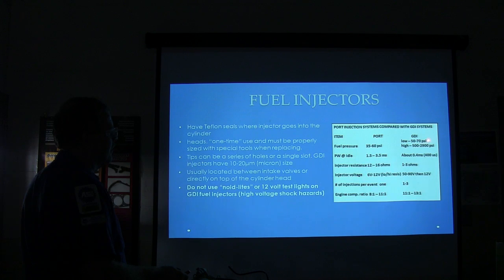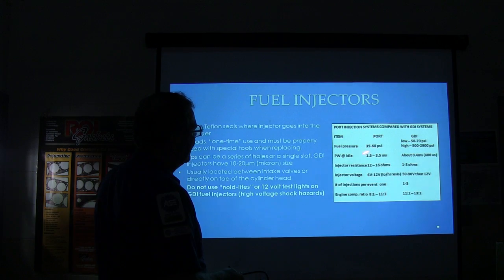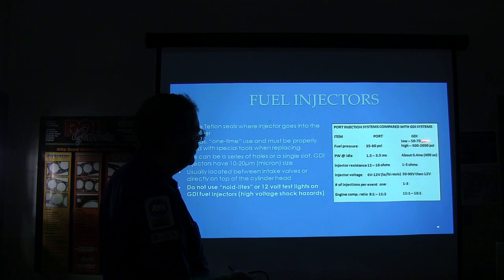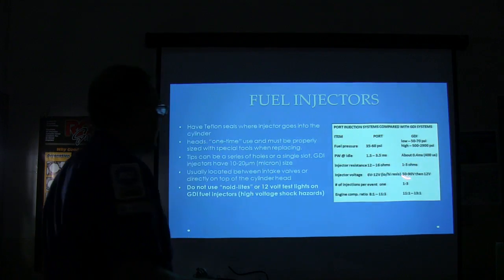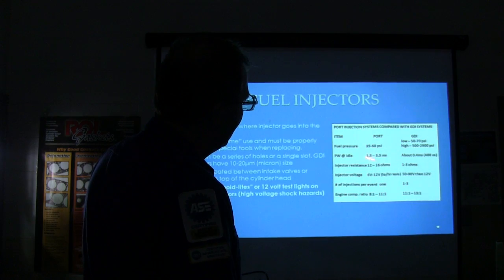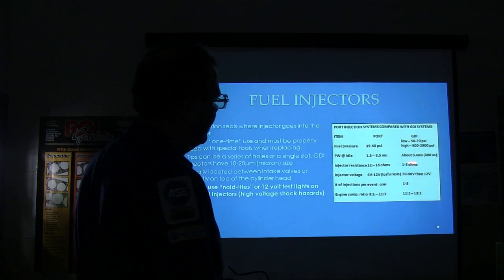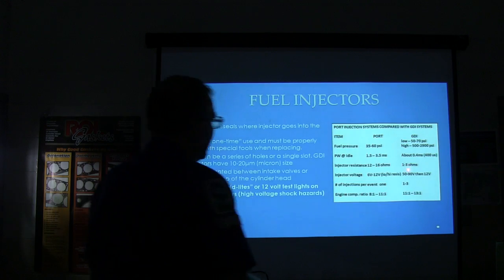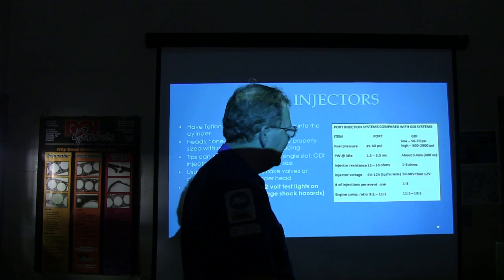Port fuel injection runs 50 to 70 PSI low pressure. GDI high pressure runs 500 to 1,900 or 2,900 PSI. Pulse width at idle is 1.5 to 3.5 milliseconds for port versus approximately 0.400 to 0.500 milliseconds for GDI — showing how much tighter the GDI injection window is. Injector resistance is 12 to 16 ohms for port injection versus 1 to 3 ohms for GDI. Lower resistance and higher voltage — up to 50 to 90 volts — allows faster injector actuation.